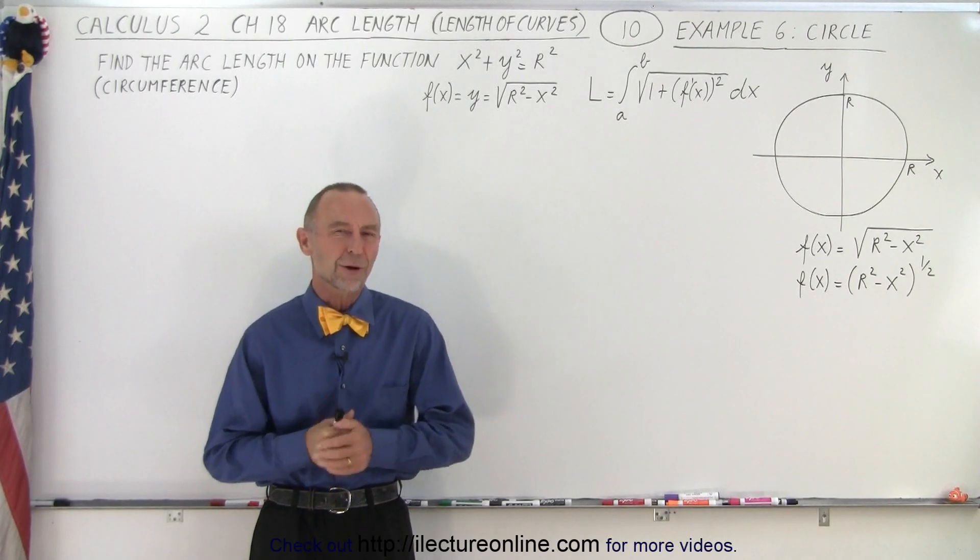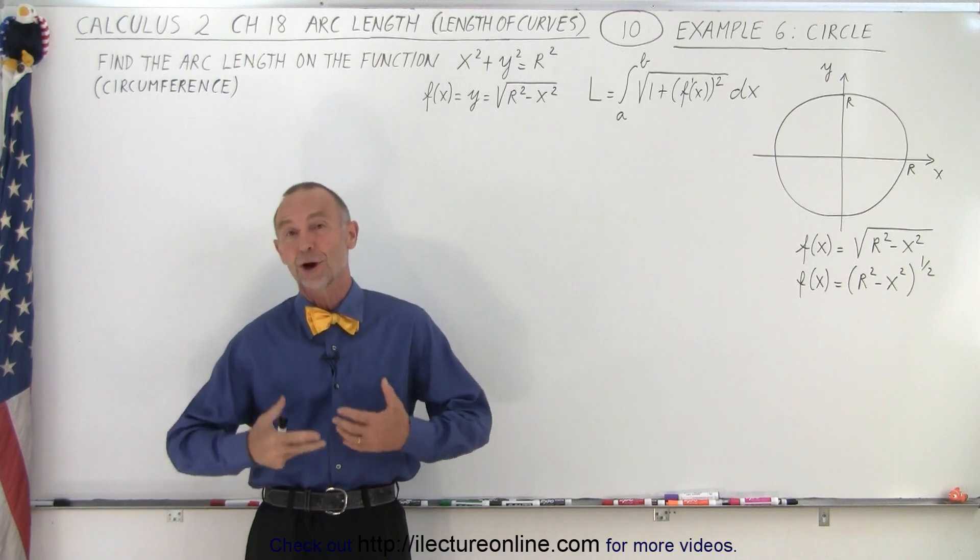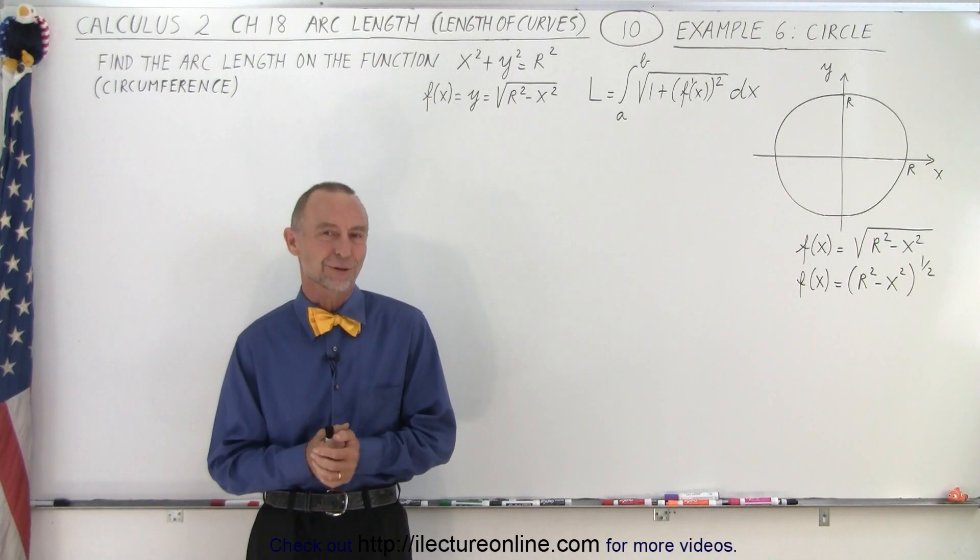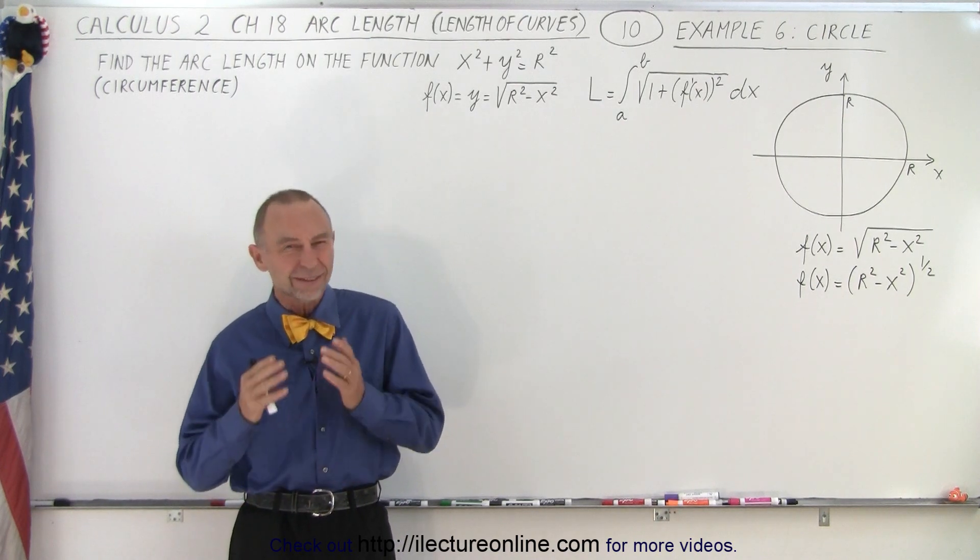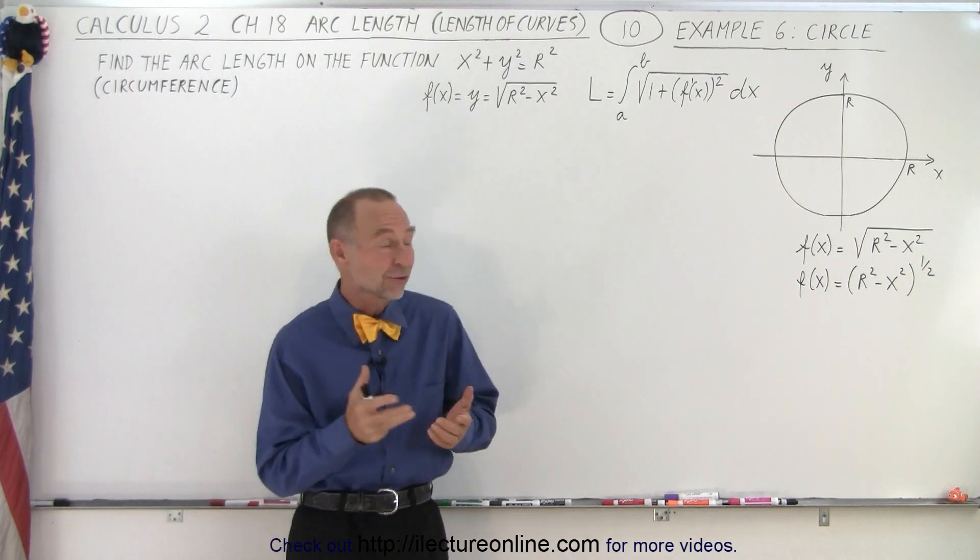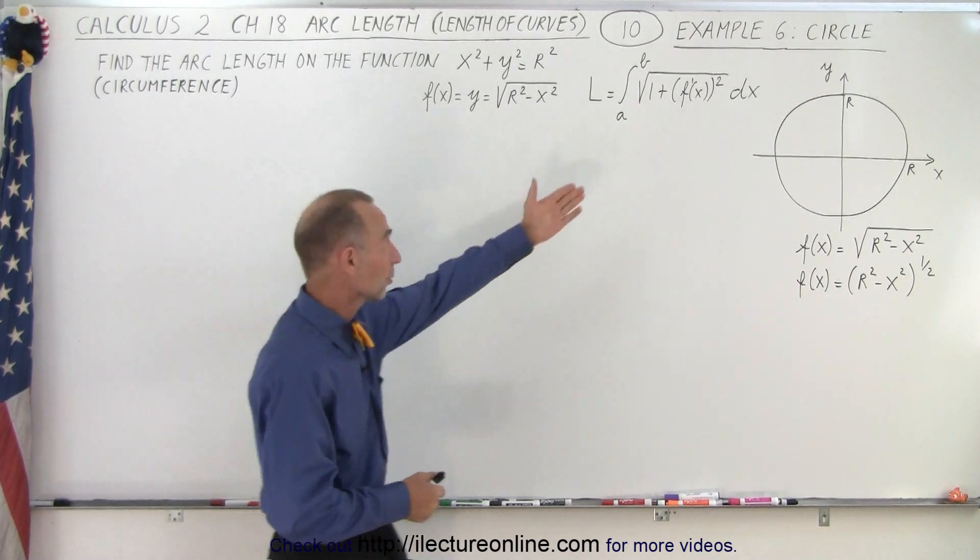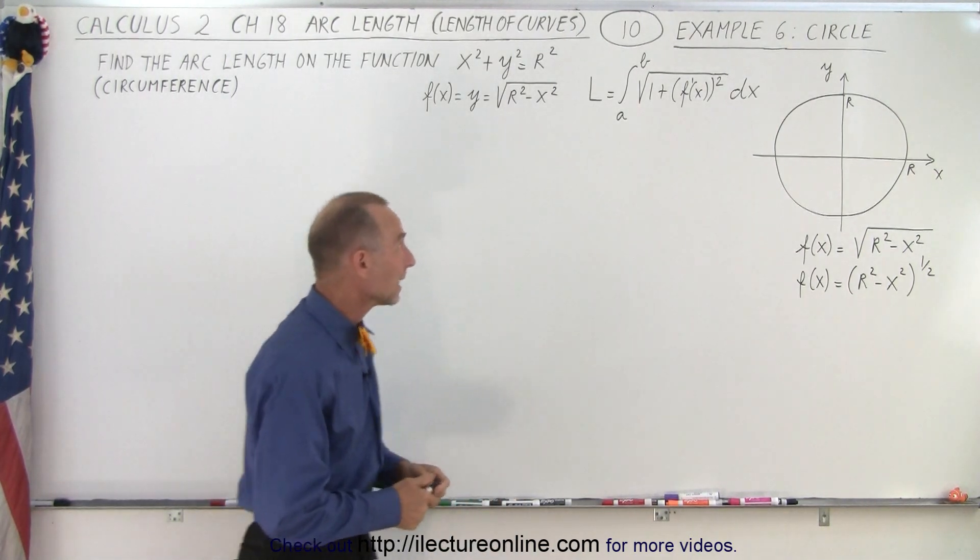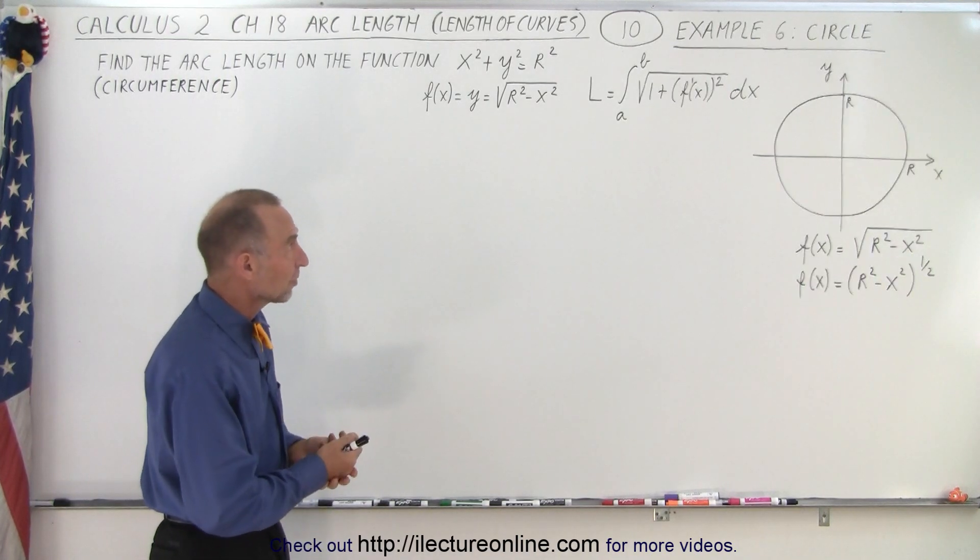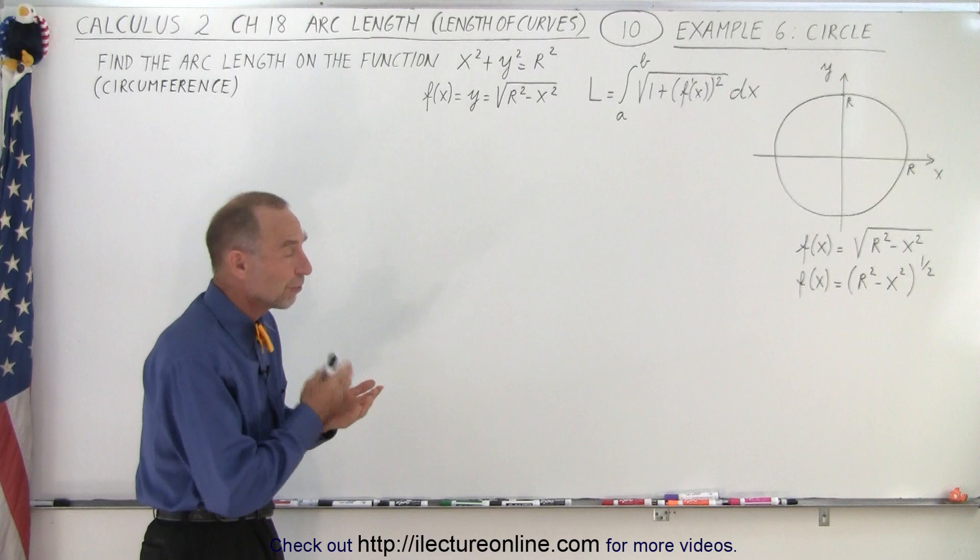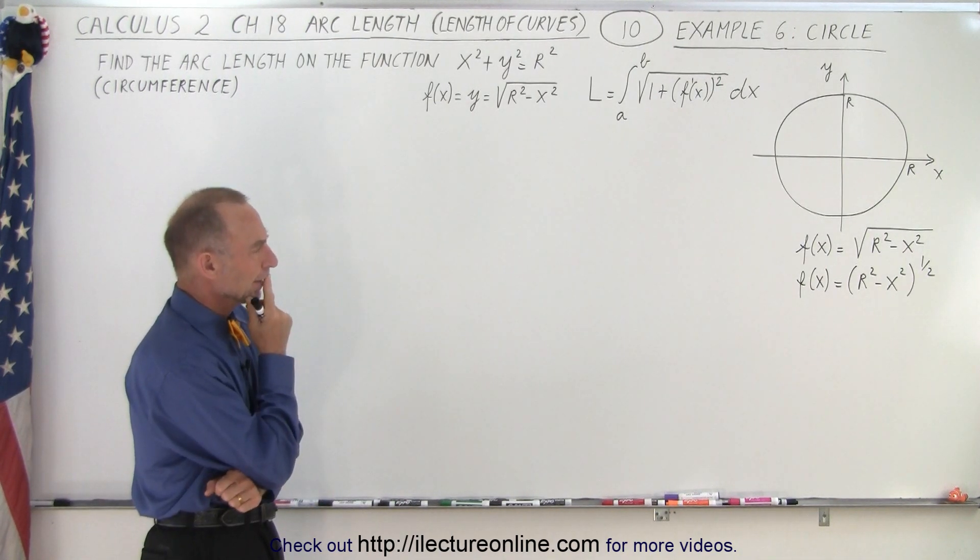Welcome to iLecterOnline. For our next example, we're going to find the circumference of a circle, the arc length of a complete circle. Now, of course, we know what that is. It's 2πr. But let's see if we can figure that out by using the equation to find the arc length. And of course, here's the general approach, where we take the integral from a to b of the square root of 1 plus the derivative of the function squared times dx.